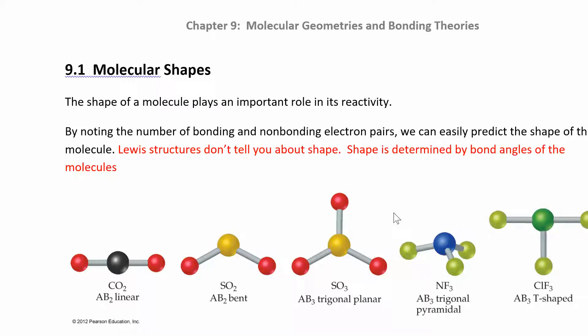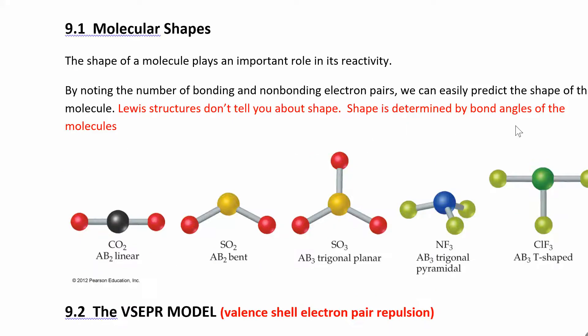In chapter 9 we're going to build on pretty much everything we learned in chapter 8. Chapter 8 was all about drawing Lewis structures and trying to figure out where electrons are in an atom and in a molecule. Now we want to look at the shape. Lewis structures don't tell us anything about the shape, but the shape plays a big role in the reactivity of the molecule, which you'll see definitely when you get to organic chemistry.